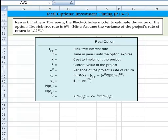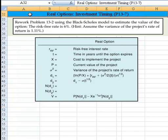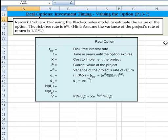Okay, let's take a look at this problem now, which continues our look at real options. We're still concerned with investment timing, but this is problem 13-7, and it involves valuing the option. It asks us to rework problem 13-2 using the Black-Scholes model to estimate the value of the option. The risk-free rate is 6% and we assume the variance of the project's rate of return is 1.11%.